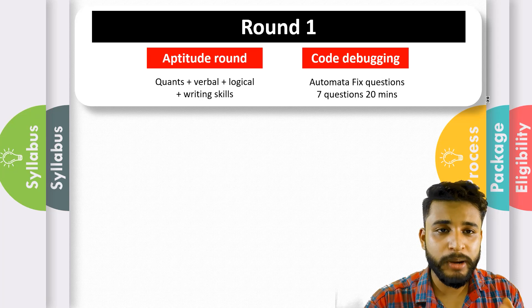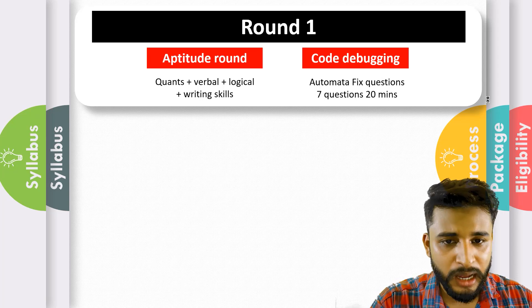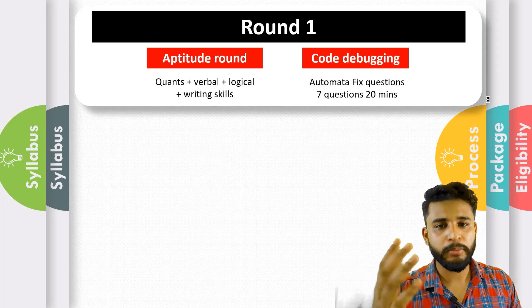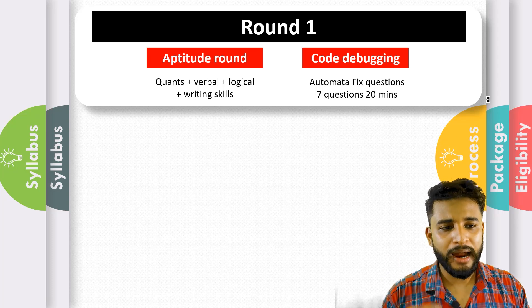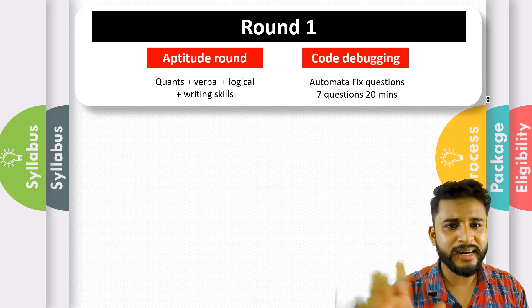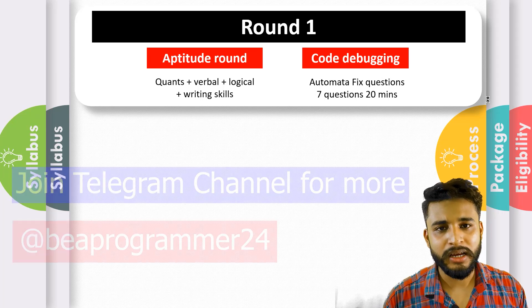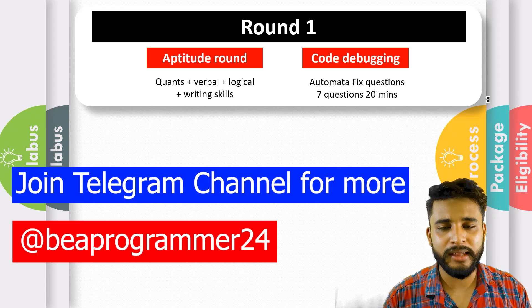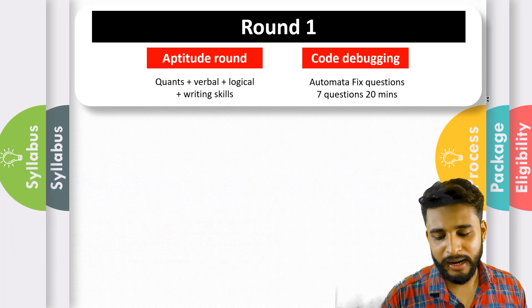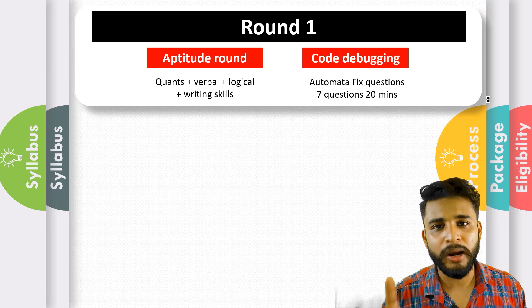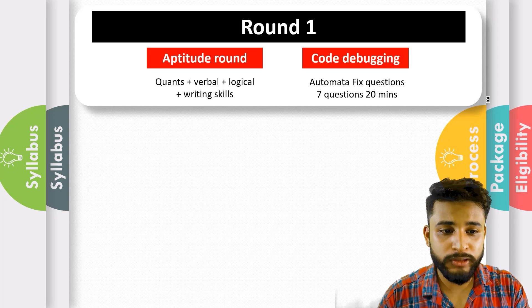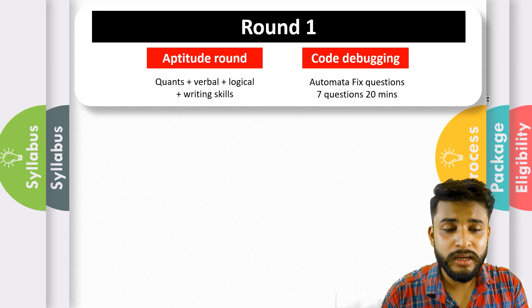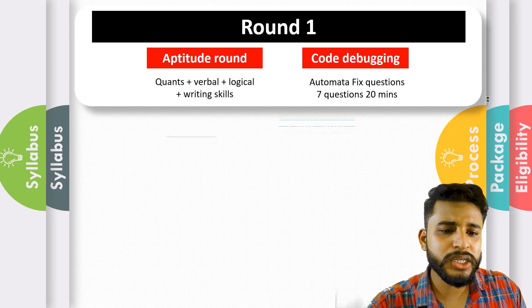The second section is code debugging, called Automata Fix. In Automata Fix, you will get seven questions and 20 minutes. Basically, a code will be written in front of you and there will be a logical mistake, syntax mistake, or some other error in it. You have to solve that error to get the preferable output shown, without changing the meaning of the code. That is the basic concept of Automata Fix.